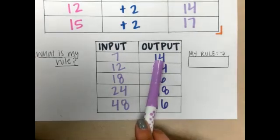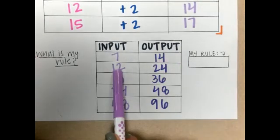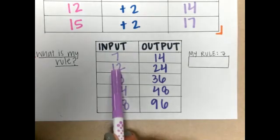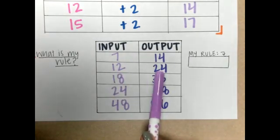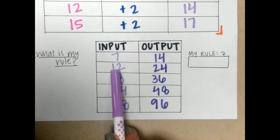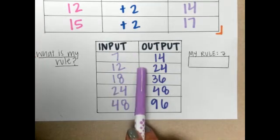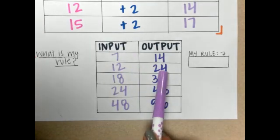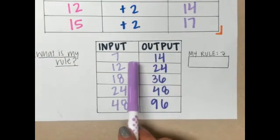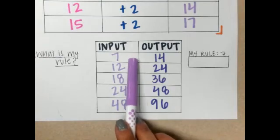Let's see if that applies for my next one. I have an input of 12 and an output of 24. I know that 12 plus 7 doesn't give me 24. It gives me 19. So plus 7 can't be my rule.